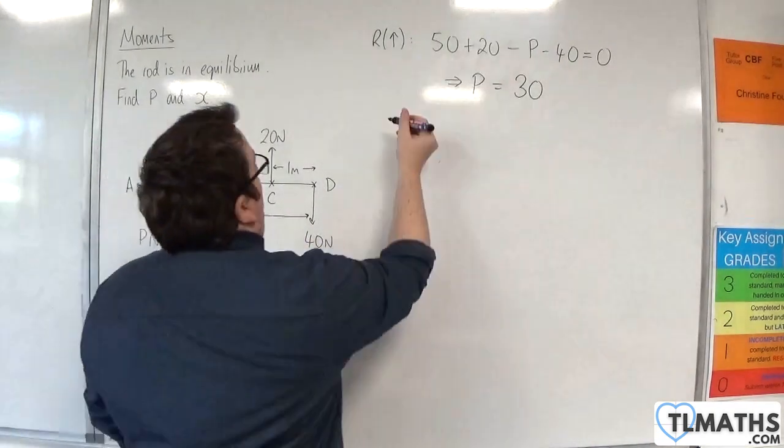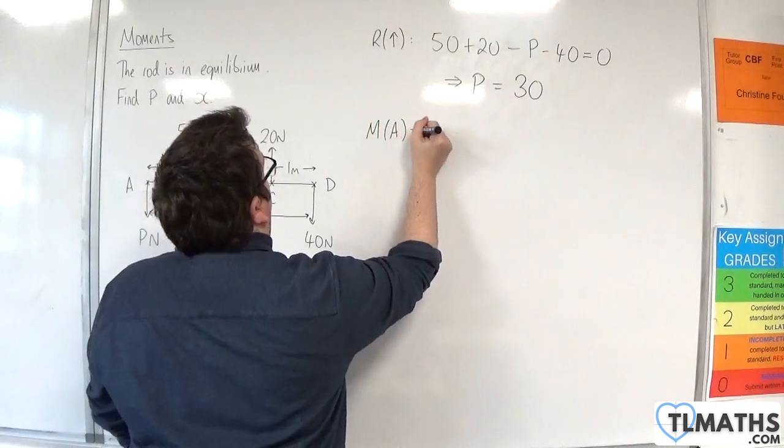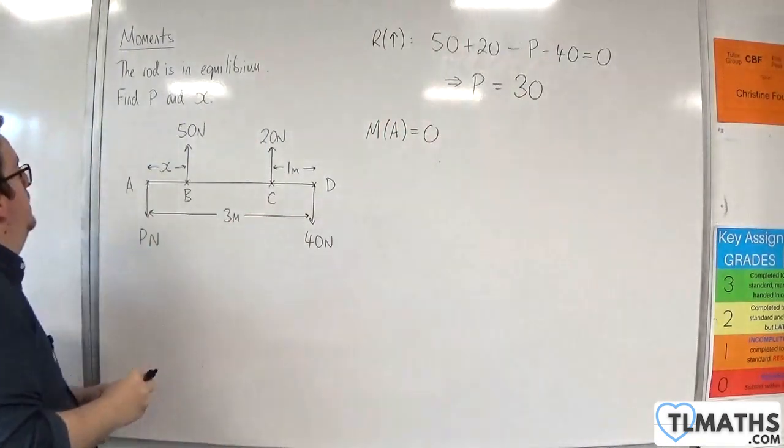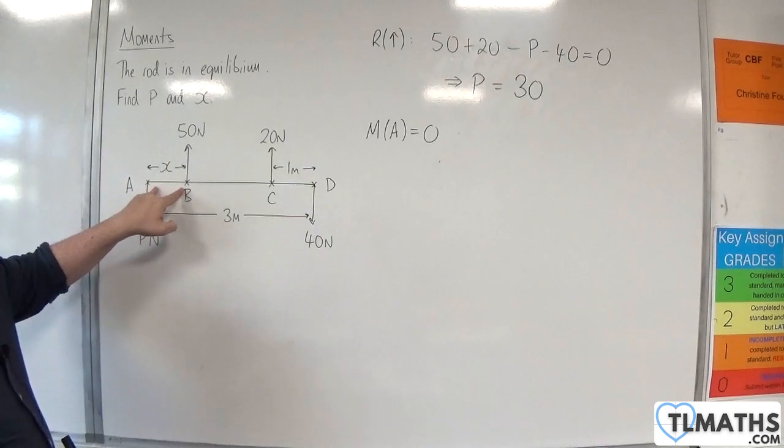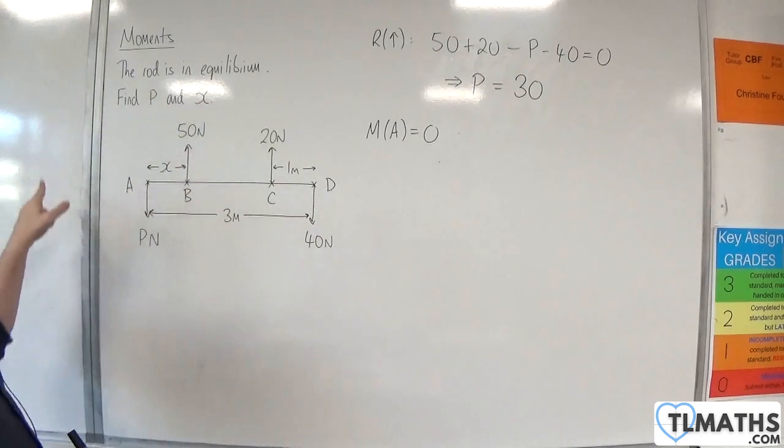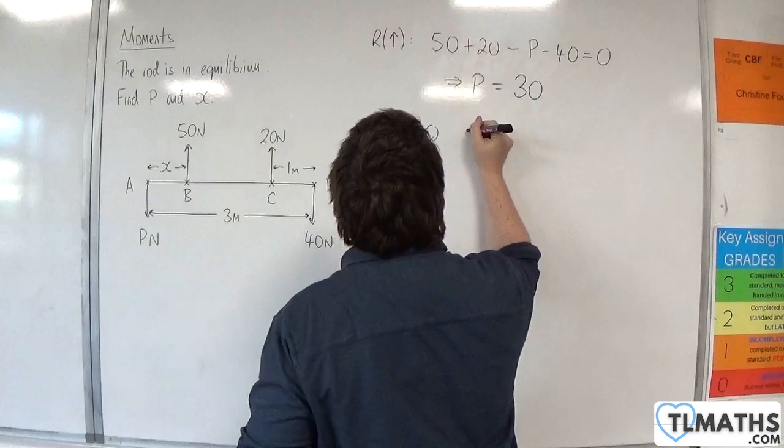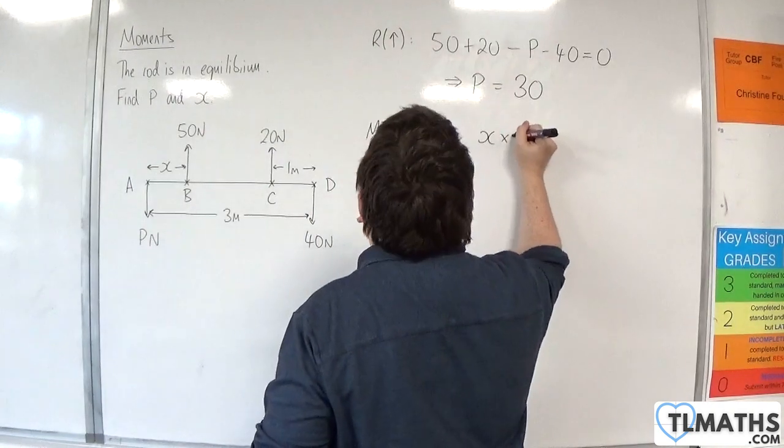Now I'm going to take moments about point A. We are X metres away from the 50 newton force and that's going around in an anti-clockwise motion, so that's positive. We've got X times 50.